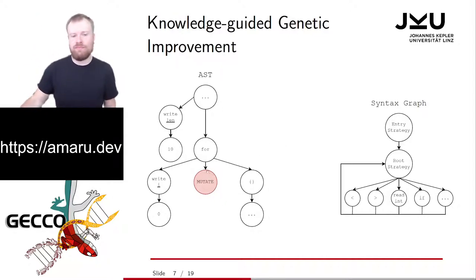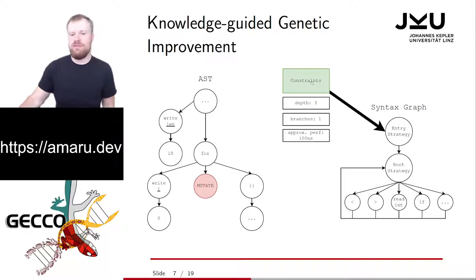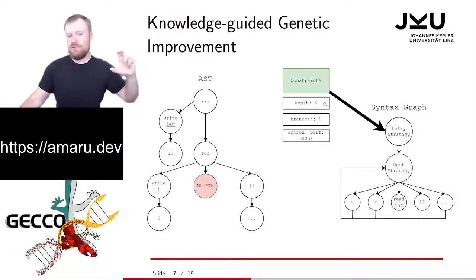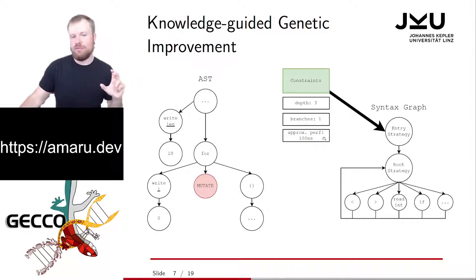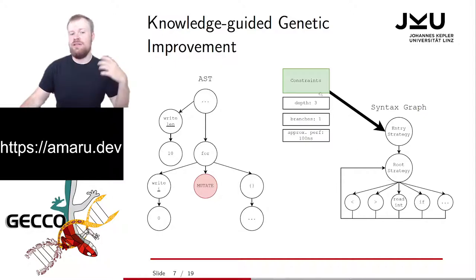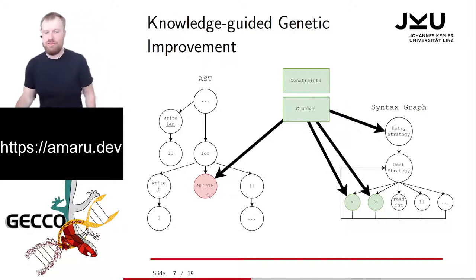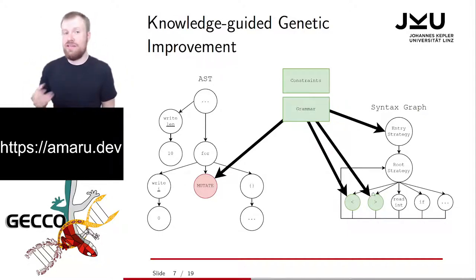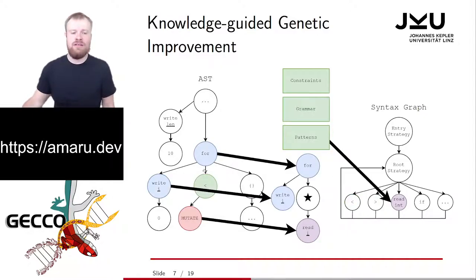Let's start at the mutation point. In our case, only a boolean expression is valid in that context, so the entry strategy gets constraints — for example, a maximum depth of 3, only one branch allowed, and approximated runtime performance limited to 100 nanoseconds. The entry strategy takes this query and asks which strategy can provide a syntax tree fulfilling all of these criteria. Because we want a boolean operation, only two strategies are activated. We randomly select one — for example, less than — and inject it.